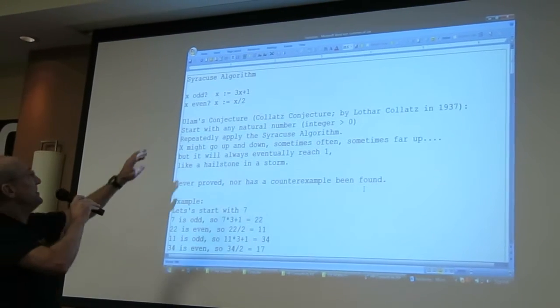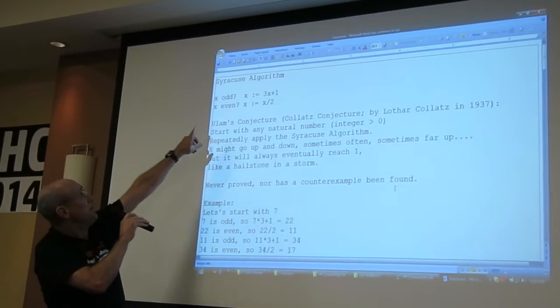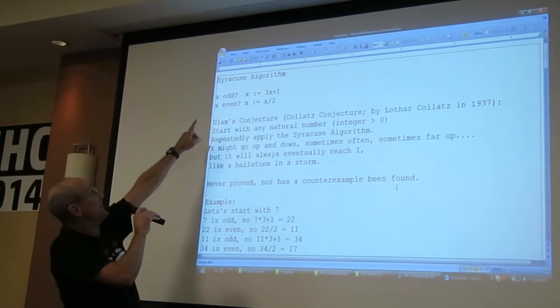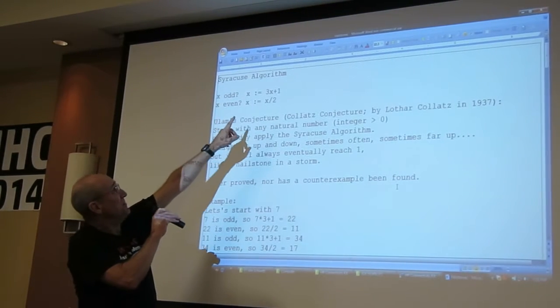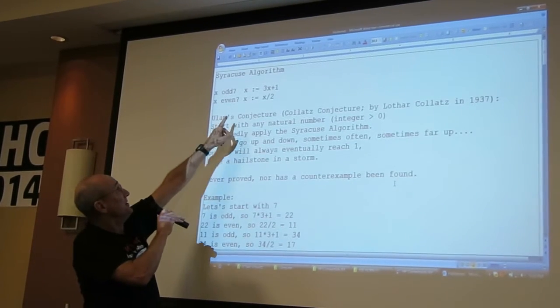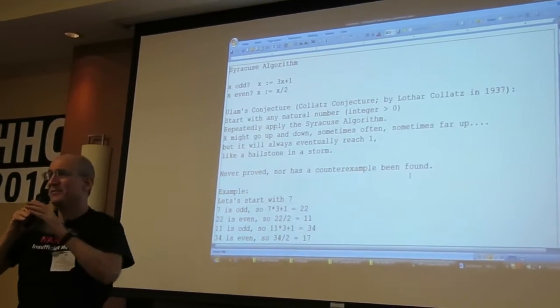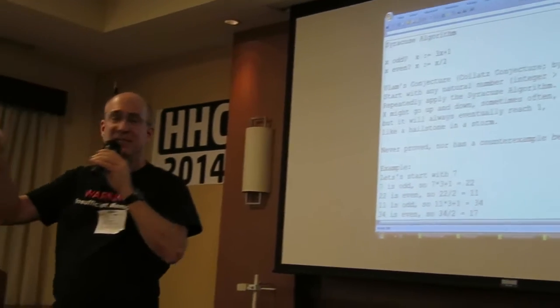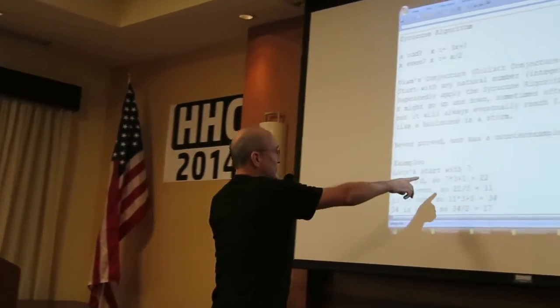But what it is is somebody, Lothar, said suppose you just start with any number, let's call it x. And if it's odd, multiply it by 3 and add 1. Or if it's even, divide it by 2. Okay, so let's pick a number. Let's say 2 and a half. I think I have one here. Oh yeah, let's start with 7.